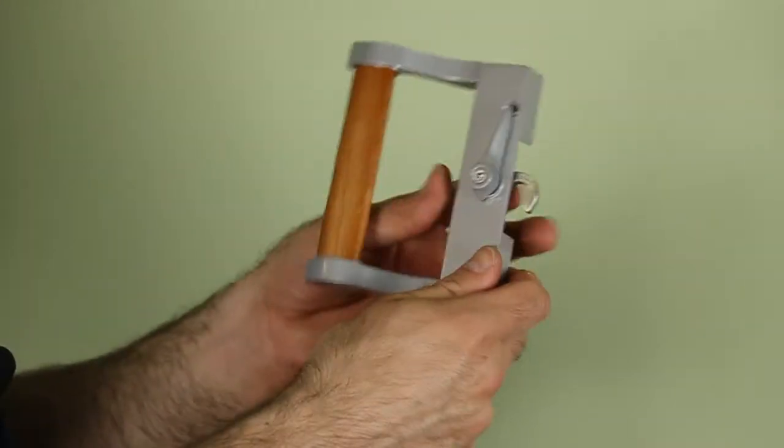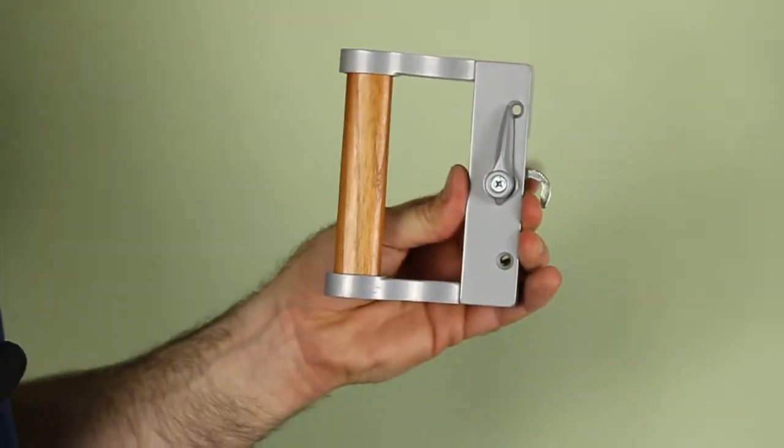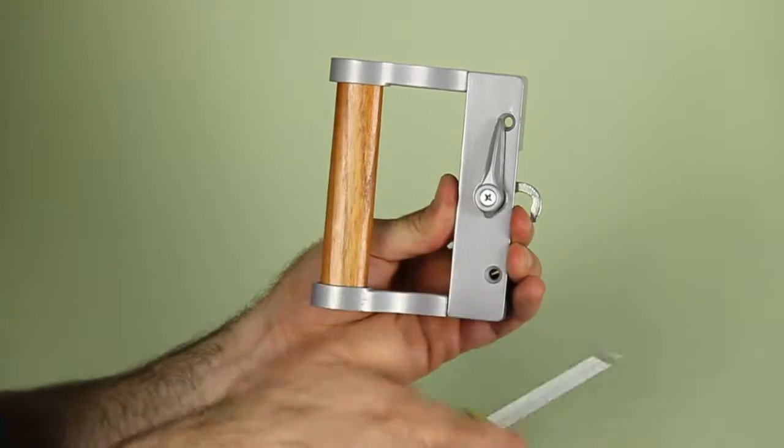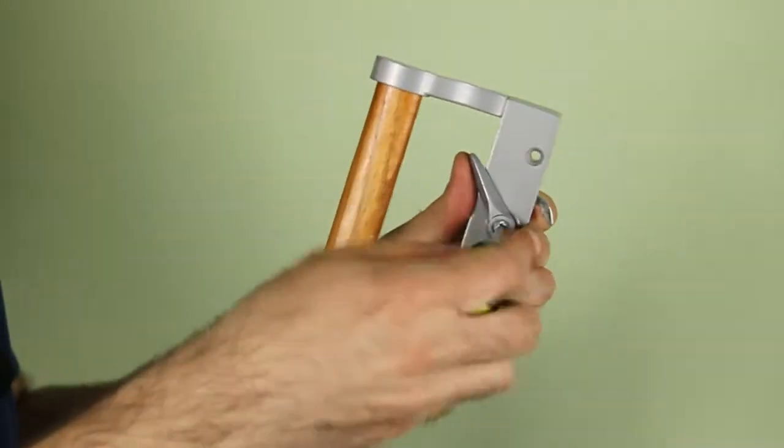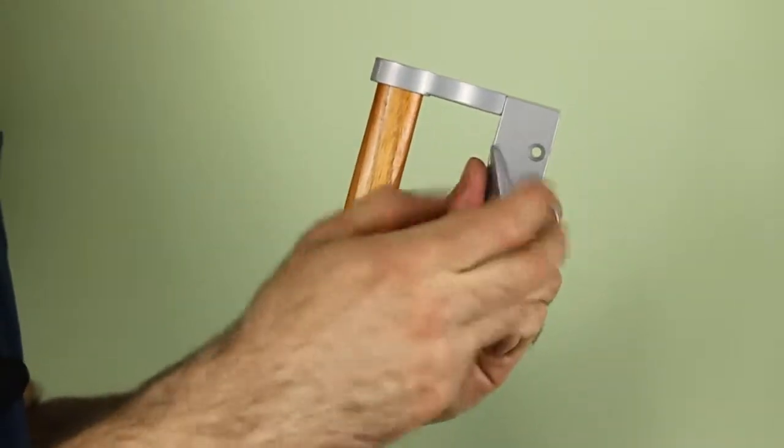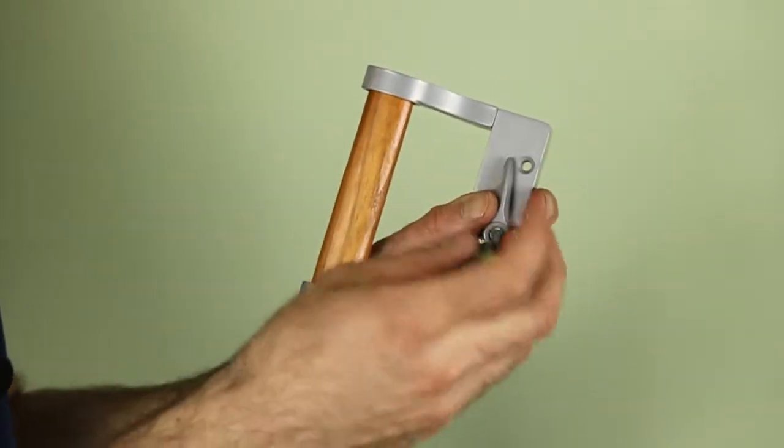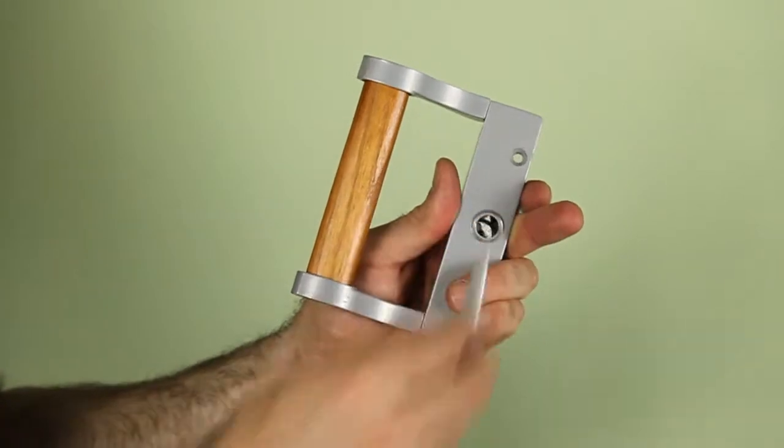Flip the handle back over and use your Phillips head screwdriver to remove the thumb turn from the handle and the locking mechanism in the back. Set your screw and thumb latch aside.